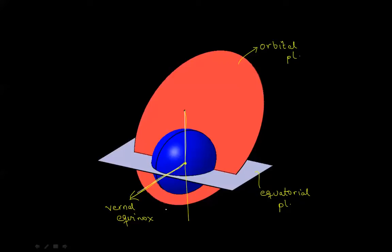The orbital plane intersects the equatorial plane, forming a line of intersection with two key points. Where an object crosses the equatorial plane going from below to above, that point is known as the ascending node. On the other side, where the object descends to below the equatorial plane, that point is known as the descending node.